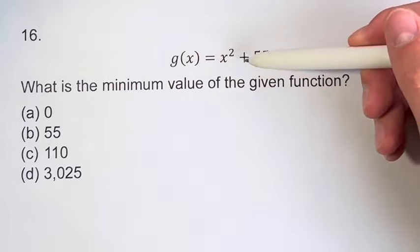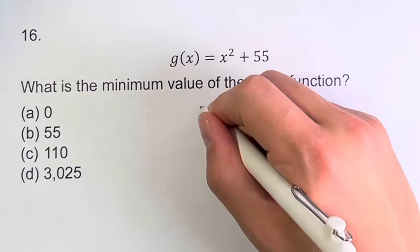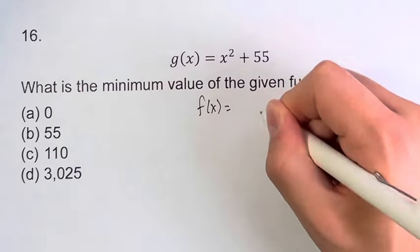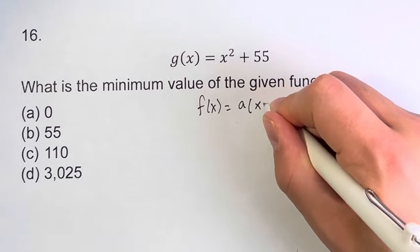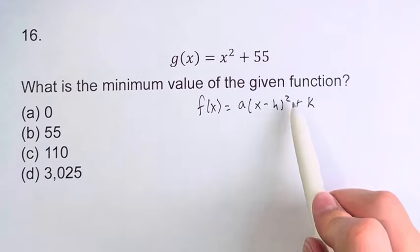So the minimum value of a quadratic like this one is the vertex. So we want to get this into vertex form. What does that look like? Well, it would be f of x is equal to a times x minus h squared plus k. And this gives you the vertex h, k.